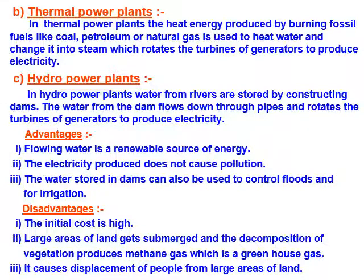In thermal power plants, the heat energy produced by burning fossil fuels like coal, petroleum, or natural gas is used to heat water and change it into steam, and the steam rotates the turbine of the generator to produce electricity.